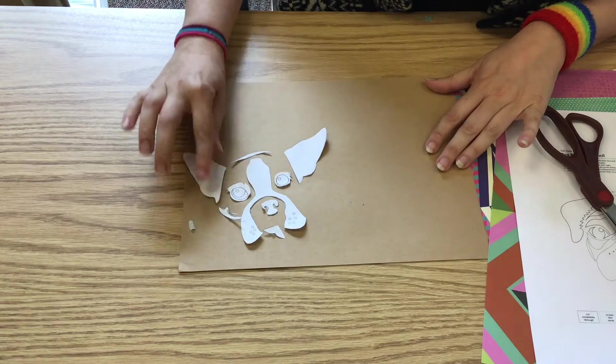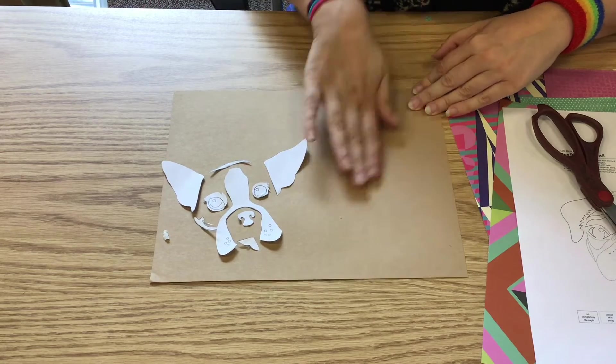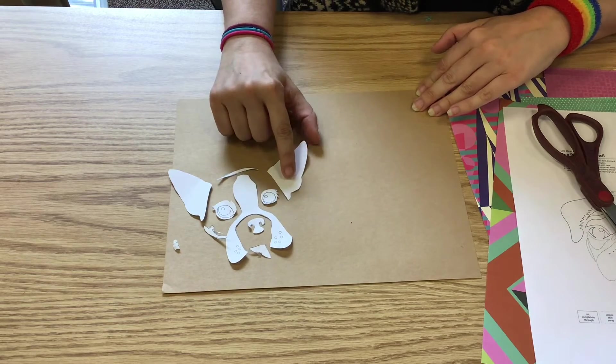I put this face over on this side of the paper because you have enough paper to make two faces, and I'm gonna put my cat over here. You can do two cats, two dogs, or a dog and a cat. You're gonna get enough paper for both.